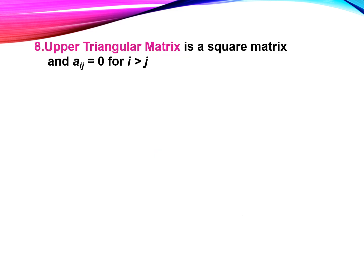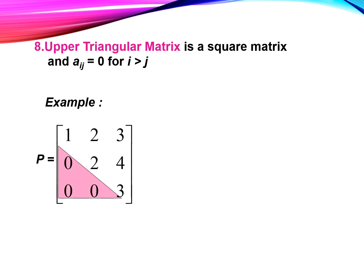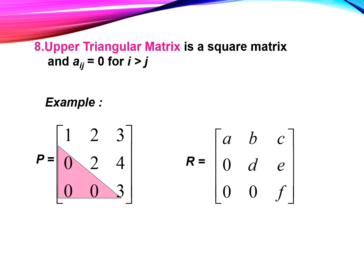And number eight, upper triangular matrix. An upper triangular matrix is a square matrix whose elements below the leading diagonal are zeros. For example, this one is the upper triangular of matrix B, and this one is the upper triangular matrix of matrix R.